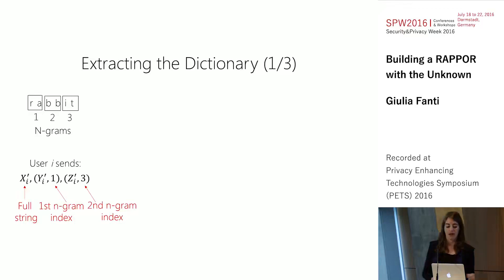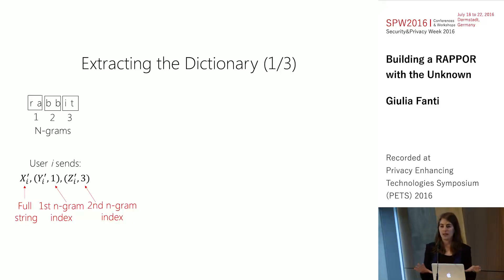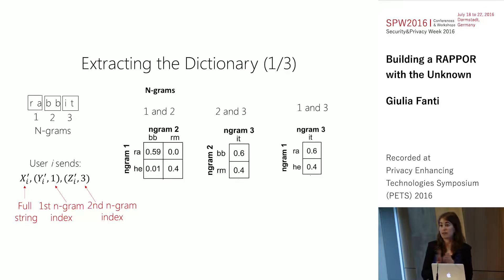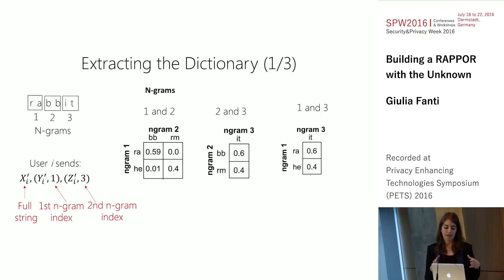The aggregator now has, from each user, a noisy report of the user's full string and two noisy reports from each substring along with the index of that substring. The first thing the aggregator does is split the dataset into users that reported the same pair of n-grams. In our case, since the string length is six, there are three possible pairs of n-grams: n-grams 1 and 2, 2 and 3, and 1 and 3. For each group of users reporting the same pair of n-grams, the aggregator computes the joint distribution between those n-grams.